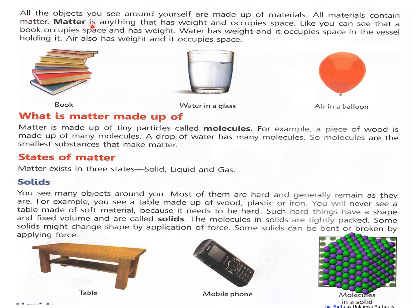All the objects you see around yourself are made up of materials. All materials contain matter. Matter is anything that has weight and occupies space. For example, a book occupies space and has weight. You can see in these pictures that books are occupying space and if you lift a book you can feel its weight also.